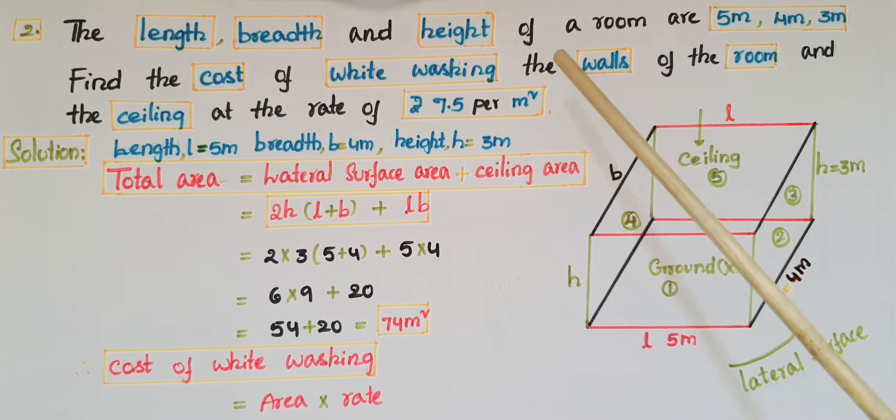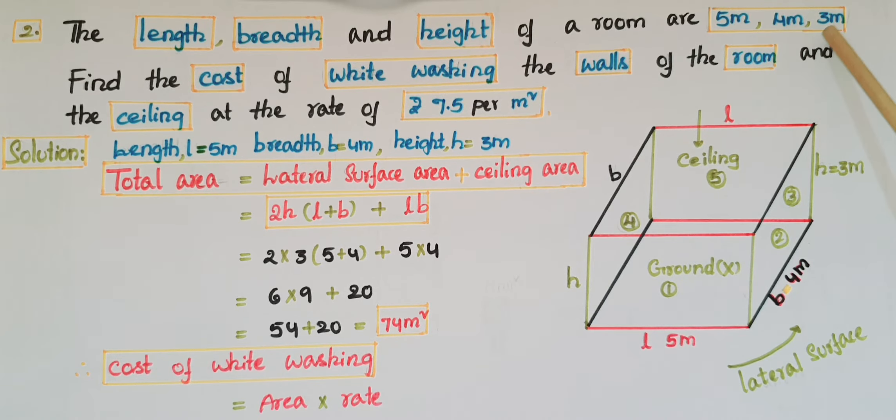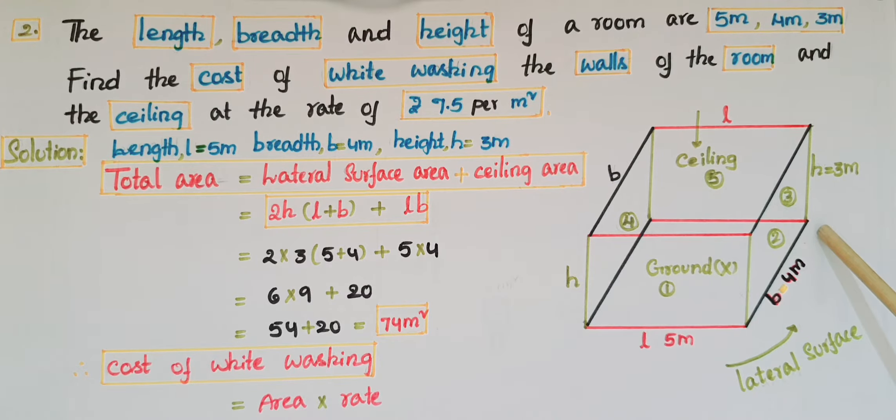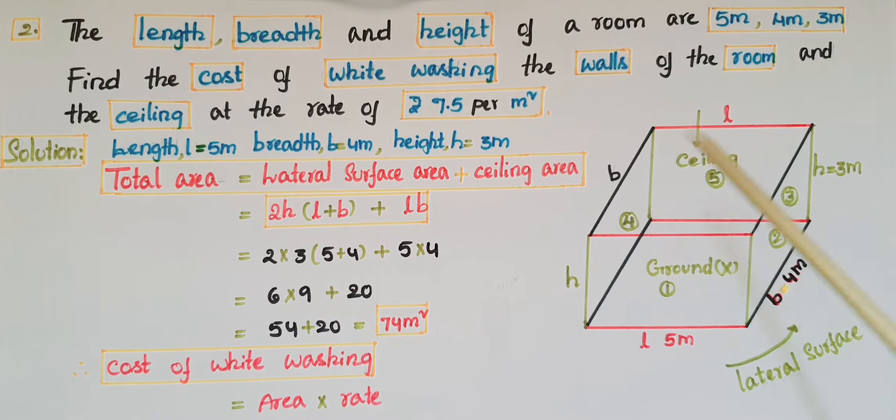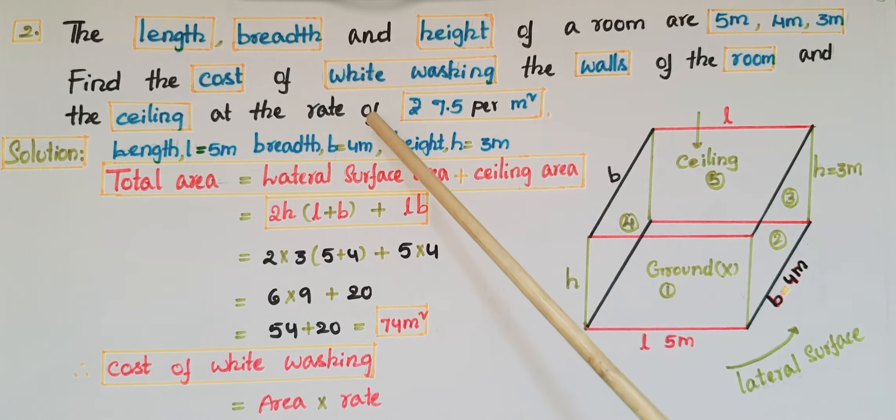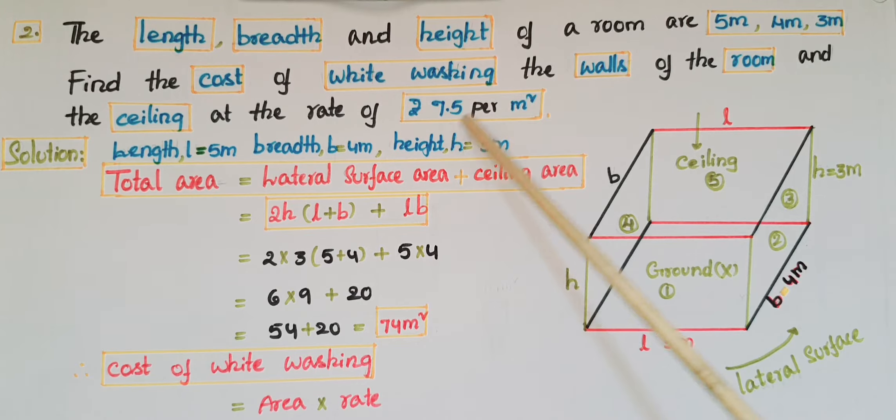The second problem: The length, breadth, and height of a room are 5 meters, 4 meters, and 3 meters. Find the cost of whitewashing the walls and ceiling at the rate of 7.5 rupees per meter square.